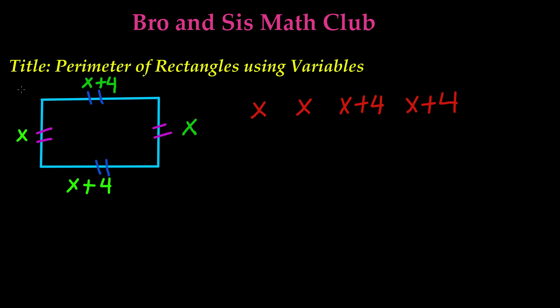But one thing we forgot to do is add the plus signs. Since perimeter is adding all the sides together, we have to add all of these sides together. So we have to do x plus x, plus x plus 4, plus x plus 4.